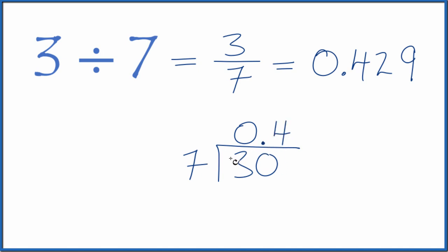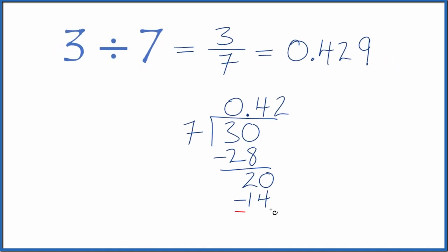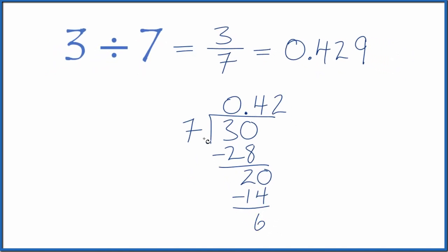Now, 4 times 7, that's 28. We subtract and get 2. Call it 20 and move over 1. 2 times 7 is 14. Subtract and get 6. Call that 60 since 7 doesn't go into 6.